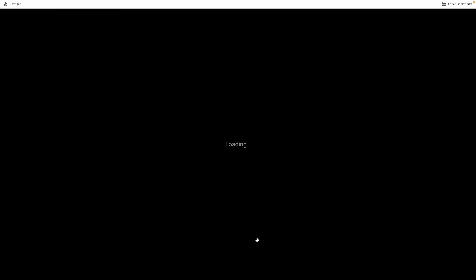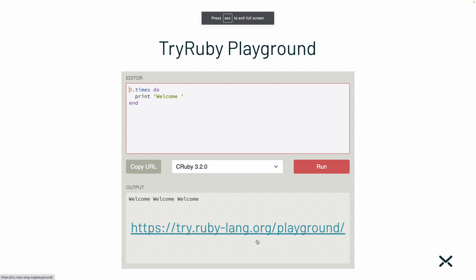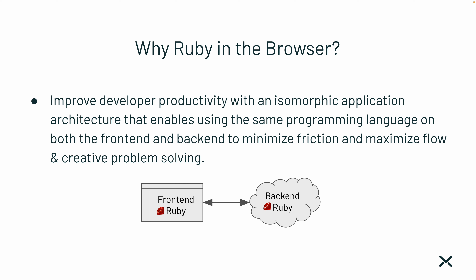Now that I've given a full demo of what you can do with Ruby in the browser — proving that you have full Ruby capabilities — let's jump into another topic. Why Ruby in the browser? First, it's to improve developer productivity with an isomorphic application architecture that enables using the same programming language on both the front end and back end, minimizing friction and maximizing flow and creative problem solving.